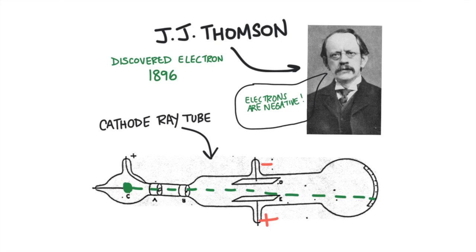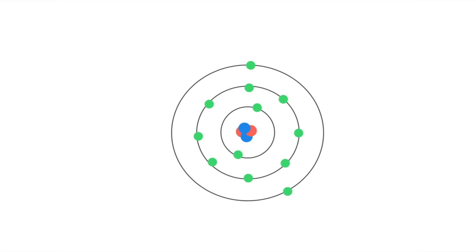Electrons circle the nucleus at certain energy levels. It was originally thought that the electrons orbited the nucleus in rings, similar to the orbits of a planet in our solar system, although now we know that this model is a little too specific about the location of the electrons. The electrons do exist at certain energy levels, but the energy levels don't look like rings. This lesson is all about the electron.